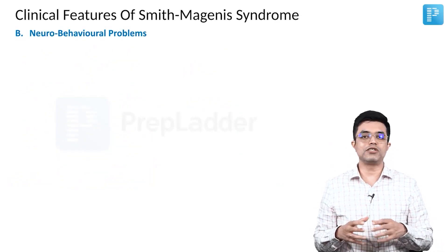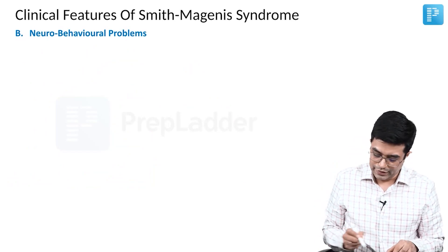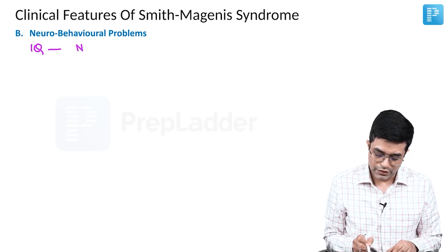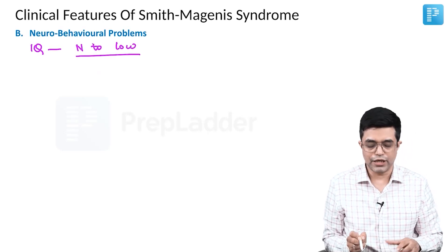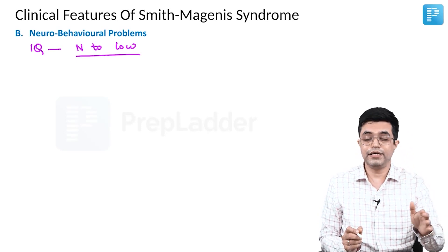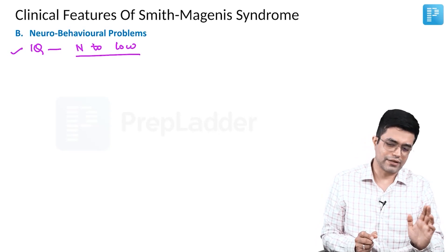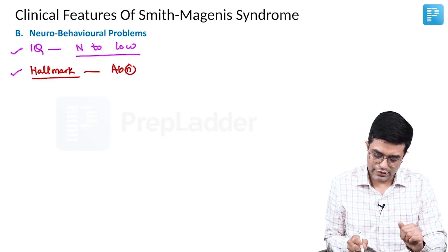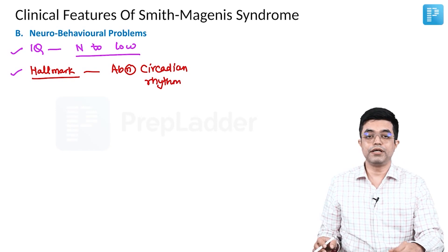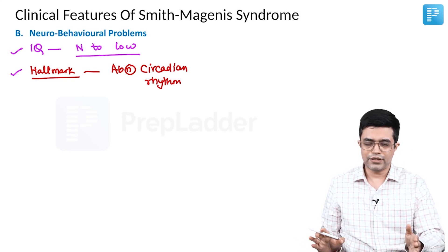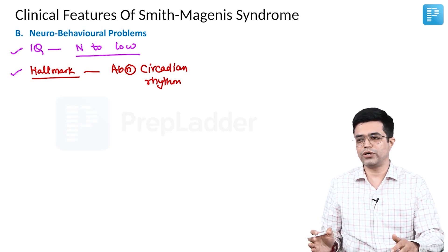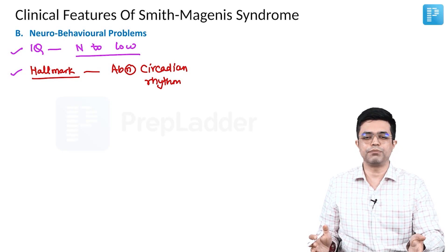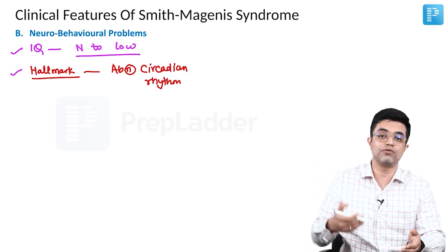The second set of problems in Smith-Magnese syndrome are neurobehavioral. IQ is normal to low — it is highly variable — and mental retardation is not a characteristic feature. The hallmark neurological finding is an abnormal or disturbed circadian rhythm: the body clock is deranged. These patients sleep during the day and remain awake at night, and even during sleep, there are frequent interruptions, giving them a constantly sleepy appearance. This disturbed circadian rhythm further contributes to behavioral changes.